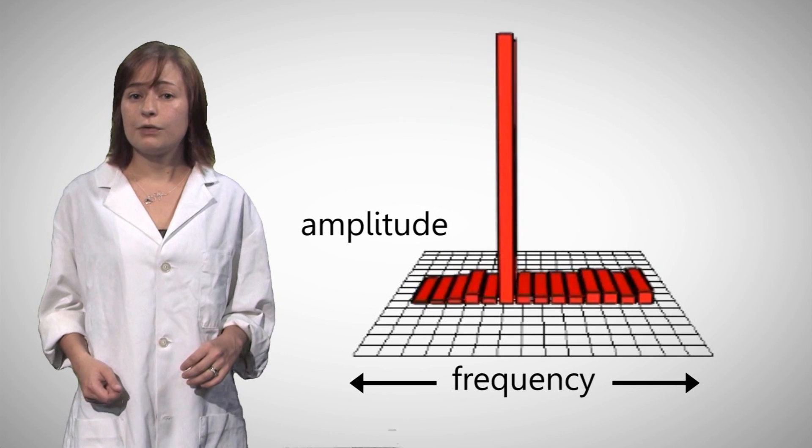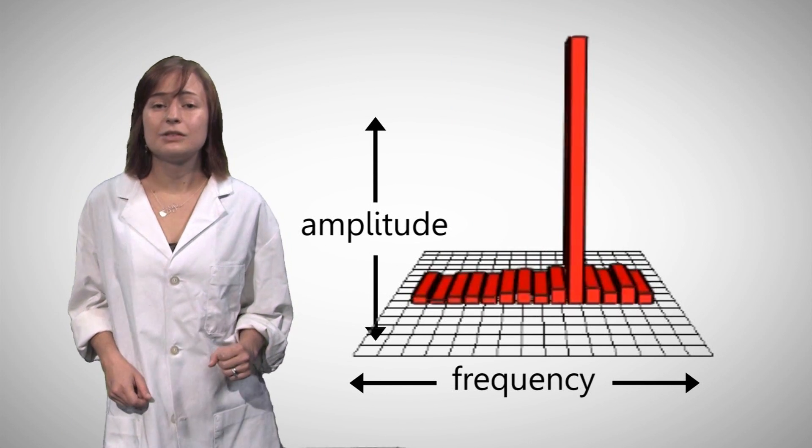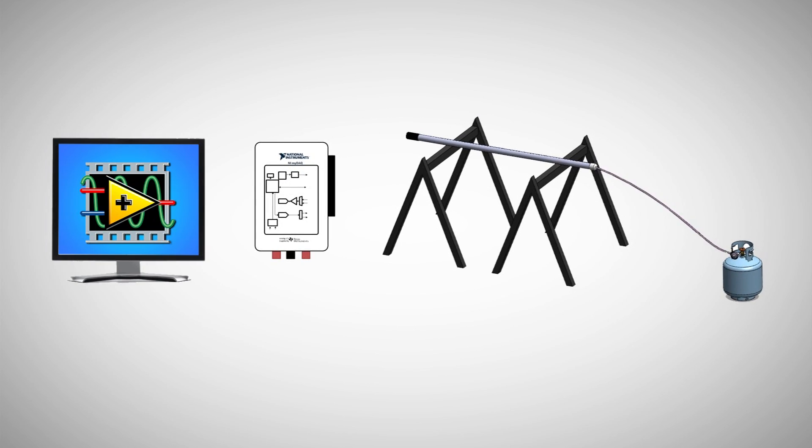Bass sounds register in lower frequencies, whereas treble sounds register in high frequencies. We then connect the output from our program to the speaker connected to the Rubens tube.